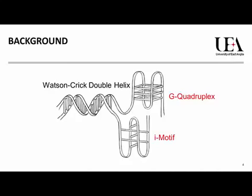However, DNA can actually form many different types of structures, and this is what this research publication is about. On the right hand side I have two different types of structure: at the top is a four-stranded structure called the G-quadruplex, and below that is another four-stranded structure called the i-motif, which is the particular structure we're interested in and which is involved in this publication.